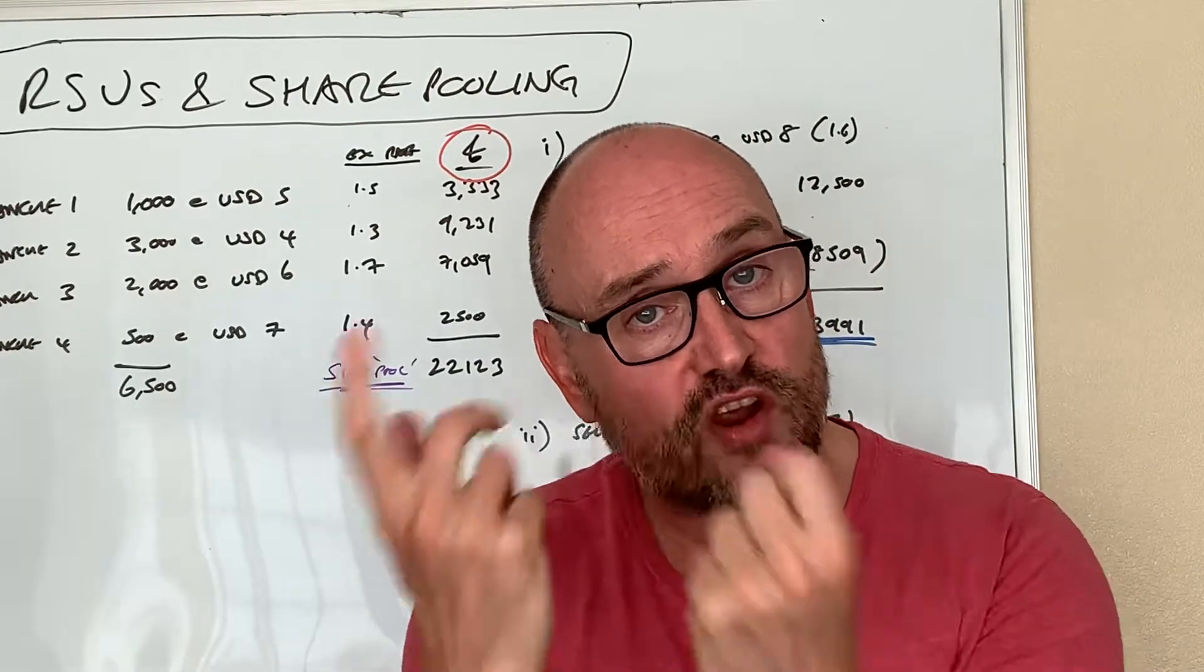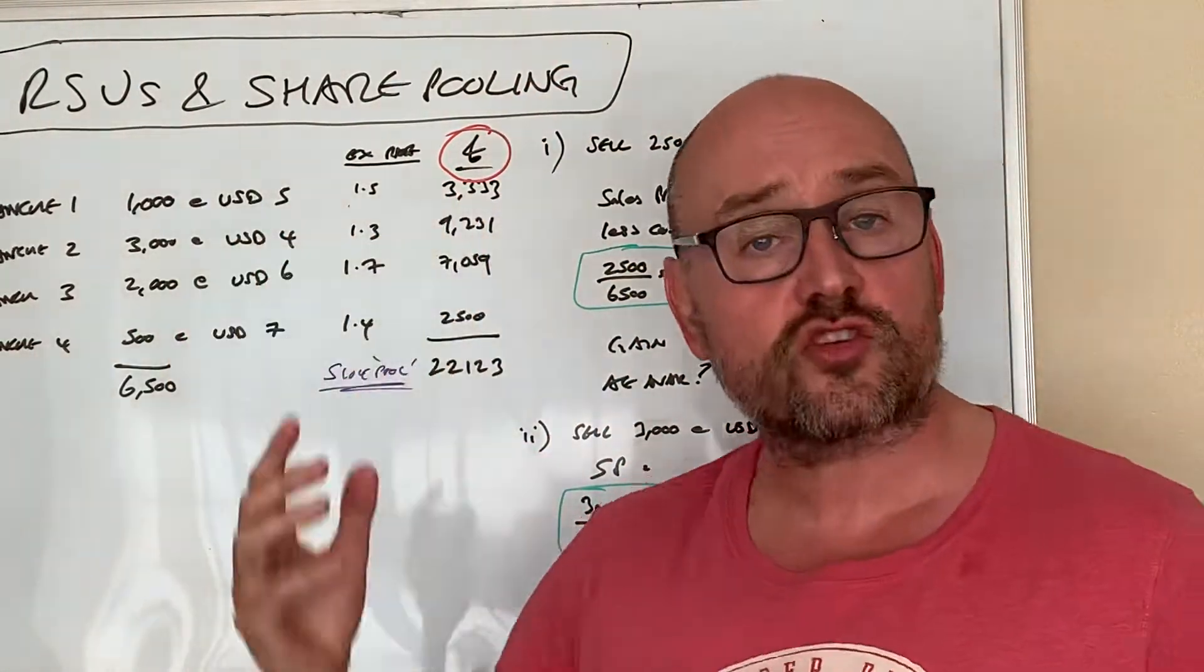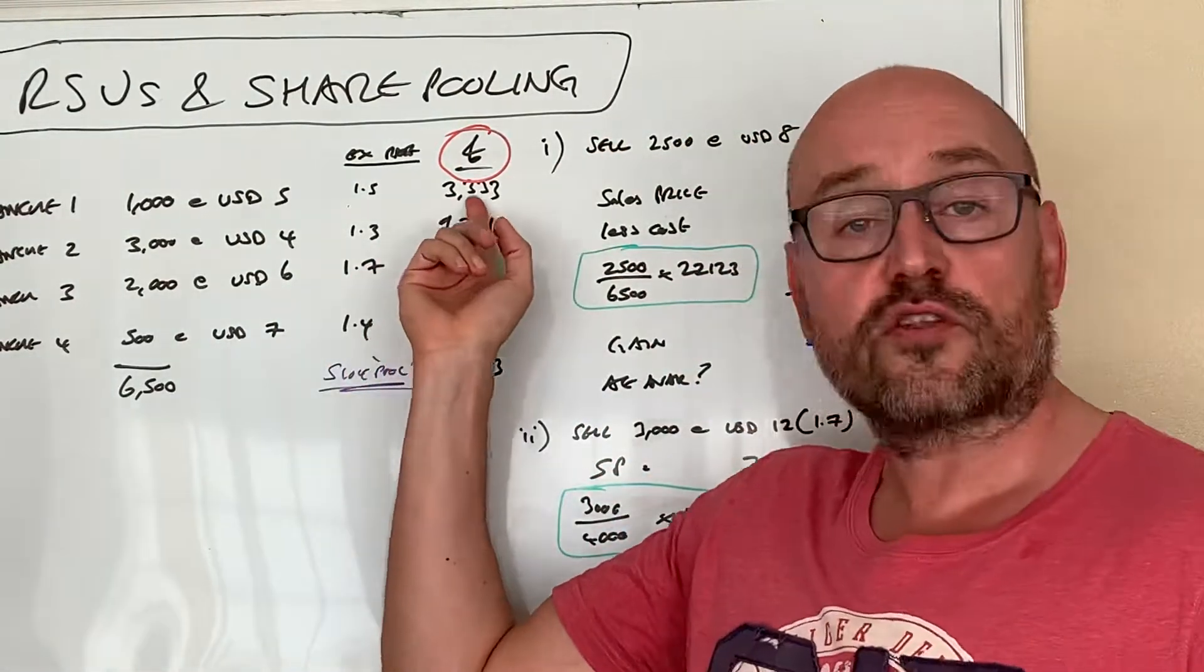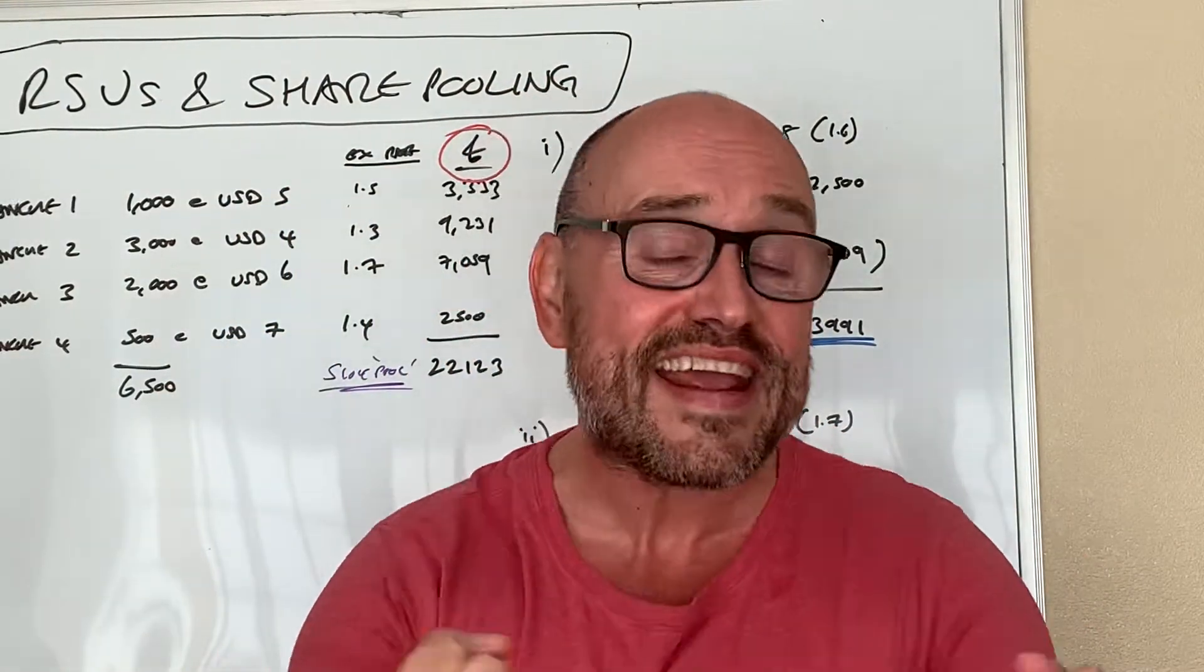Let's say it's 1.5 dollars to the pound, which means that the cost of those shares for any future disposal is 3,333 pounds. Remember, notwithstanding the fact that you would pay income tax on receiving these things.